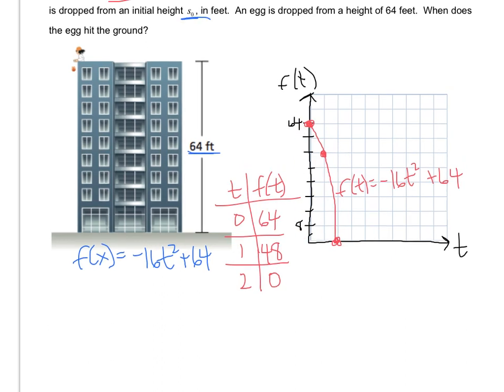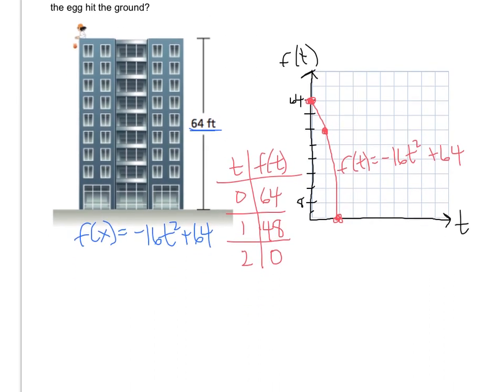So now let's answer the question. The question asks, when does the egg hit the ground? So the egg hits the ground right here at the 0, at the x-intercept. So that is a time of 2. So 2 seconds is the moment when the egg hits the ground.